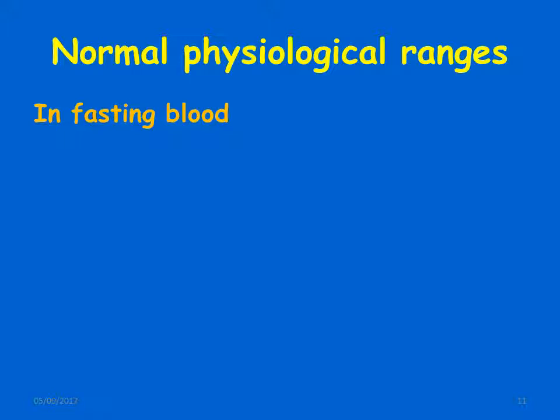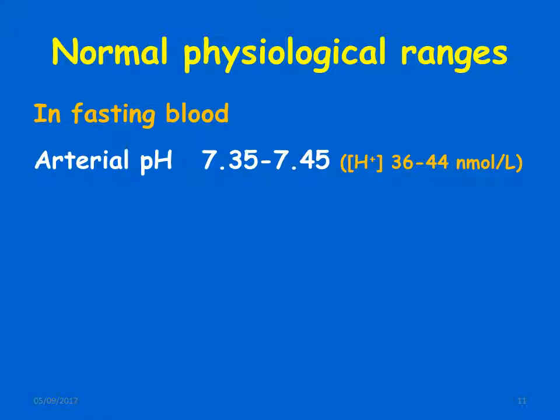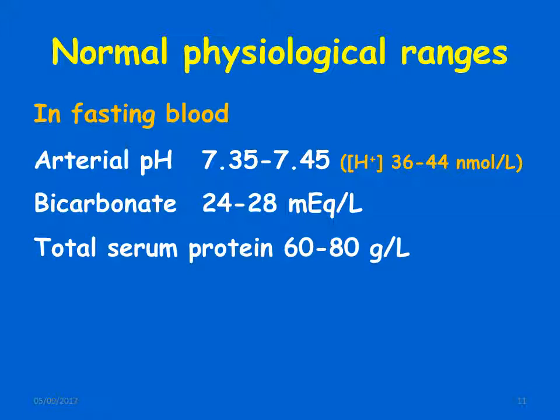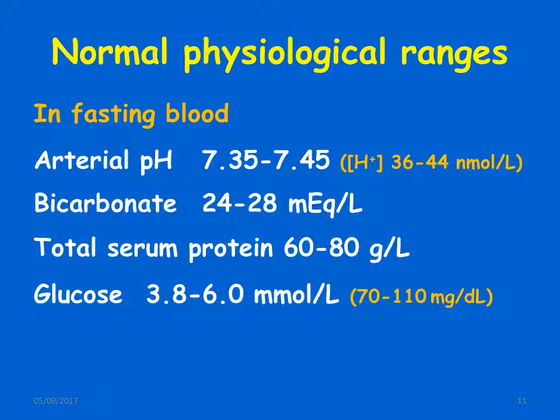Some normal physiological ranges in fasting blood: arterial pH is around 7.35 to 7.45 (36 to 44 nanomoles per litre), bicarbonate is around 24 to 28 milliequivalents per litre, total serum protein is around 60 to 80 grams per litre, and glucose is around 3.8 to 6.0 millimoles per litre (70 to 110 milligrams per litre).